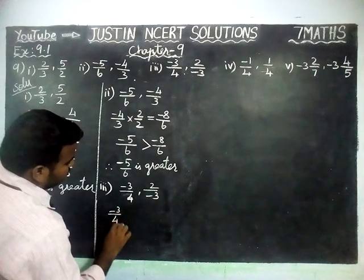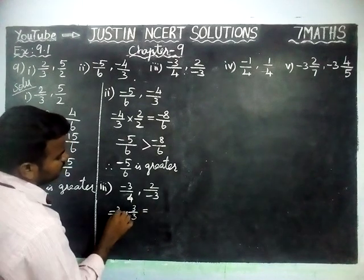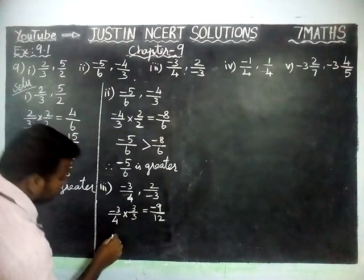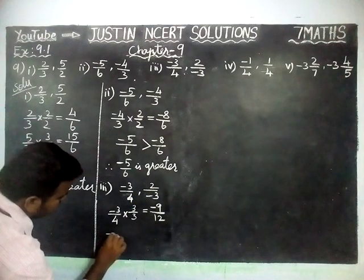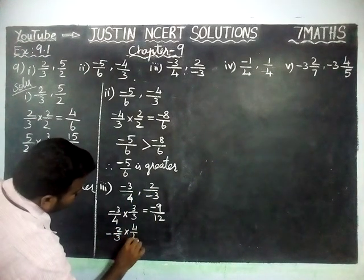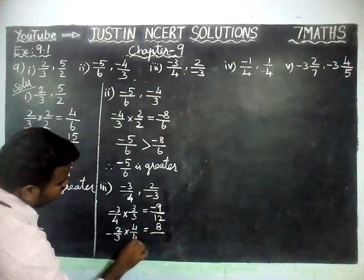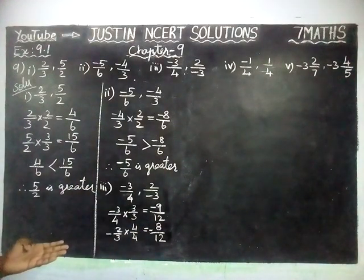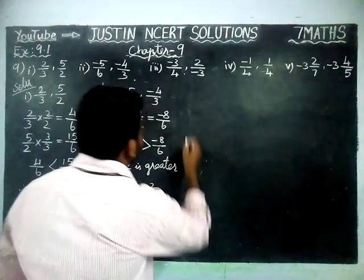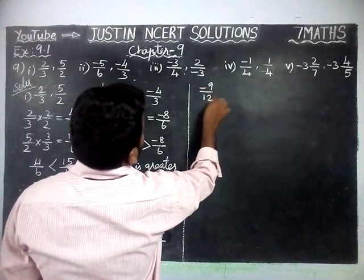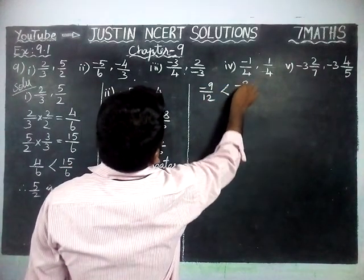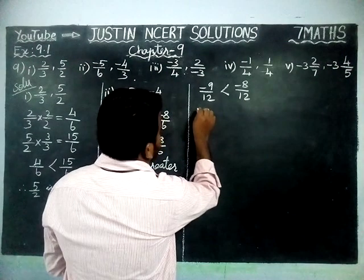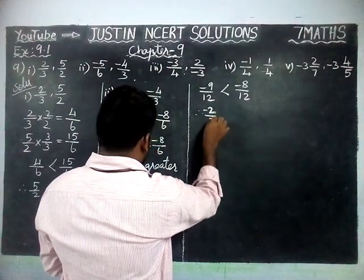-3/4 multiplied by 3/3 is equal to -9/12. And 2/(-3) will be written as -2/3, multiplied by 4/4 is equal to -8/12. Comparing -8/12 and -9/12, -8/12 is the greater number. Since -8/12 represents 2/(-3), therefore -2/3 is greater.